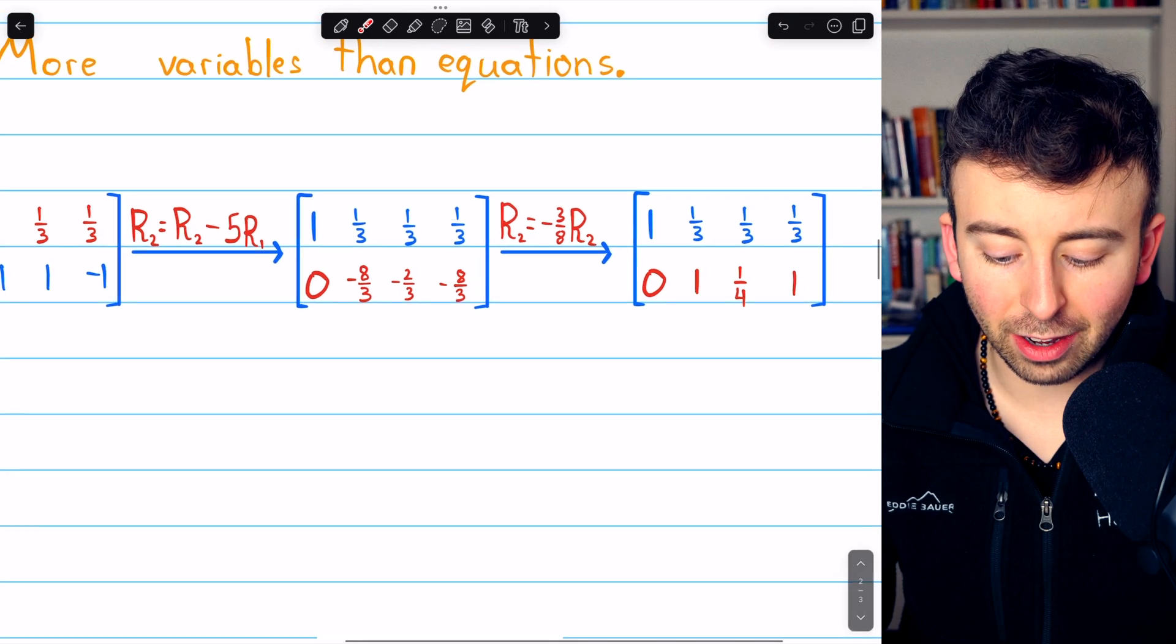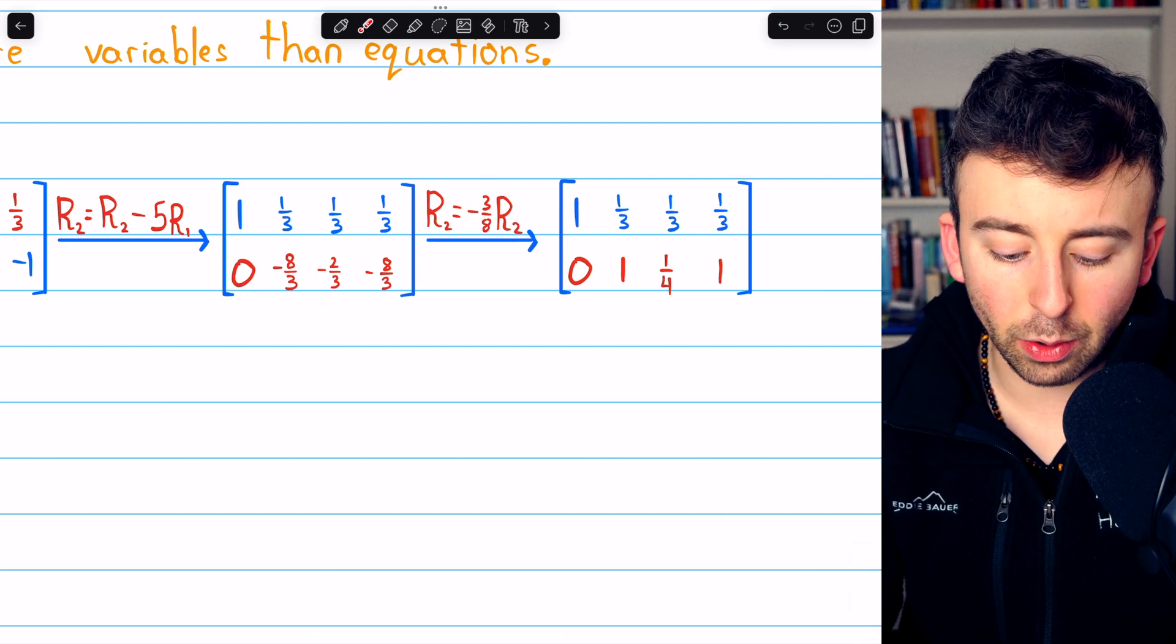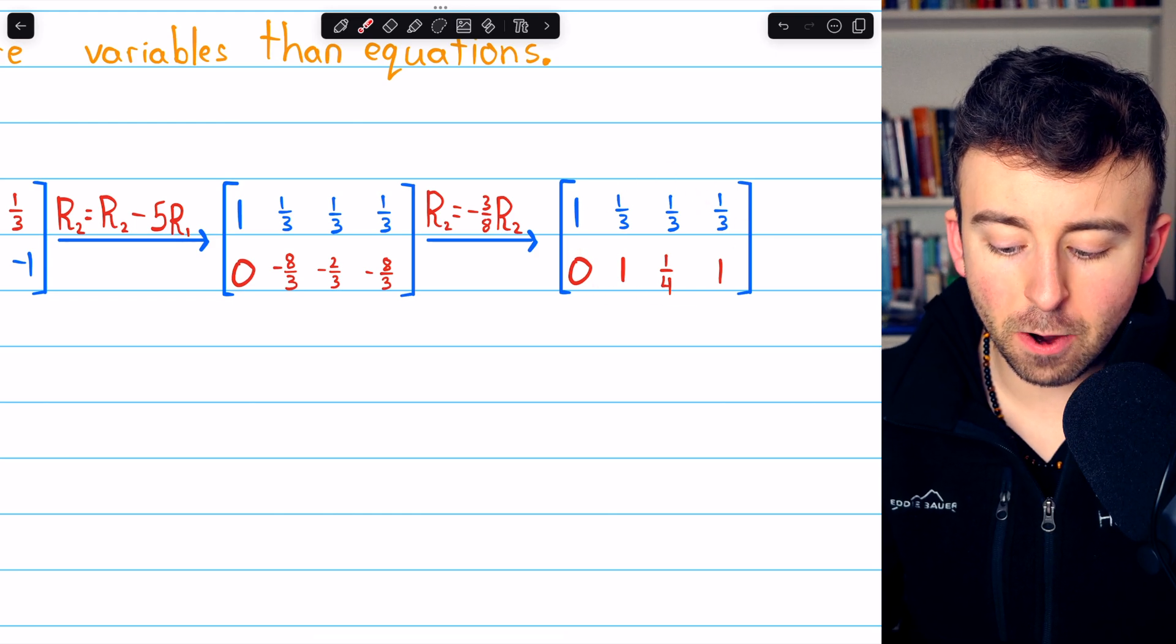Obviously, you got to be careful with all these fractions running around. Then we would multiply row two by negative three over eight in order to turn its leading entry to a one. And that gets us here.